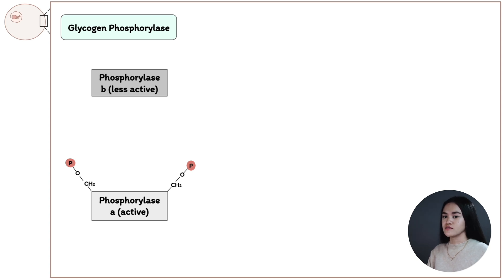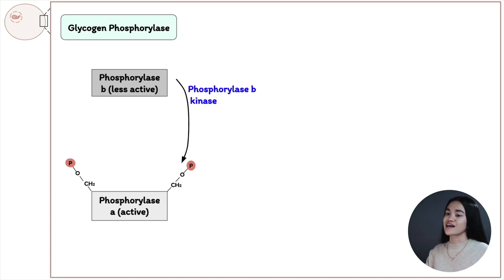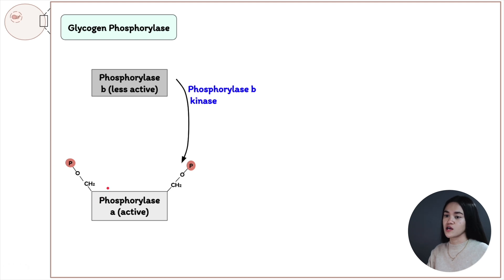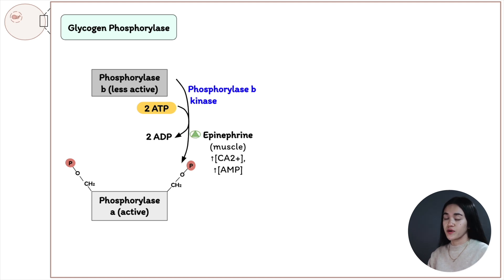When there is increased muscular activity such as during exercise, the hormone epinephrine activates the phosphorylation process of phosphorylase b and converts it to its active form, phosphorylase a. The enzyme catalyzing this phosphorylation is phosphorylase b kinase, which transfers phosphate groups to the serine residue of phosphorylase, converting it to phosphorylase a. Two ATP are required in this reaction.